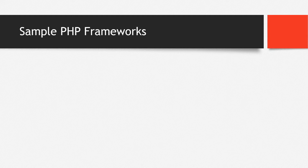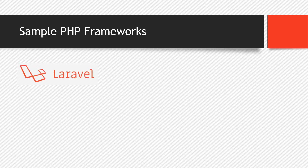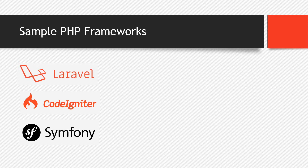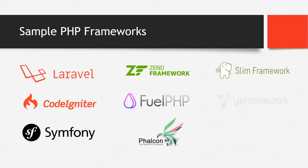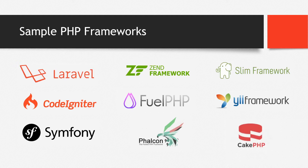Here are some examples of PHP Frameworks. Starting with Laravel, which is the number one PHP Framework nowadays. Then we have CodeIgniter, which is the PHP Framework we are going to use in this particular series. We also have Symfony, Zend Framework, FuelPHP, Falcon, Slim Framework, Yii Framework, and CakePHP.